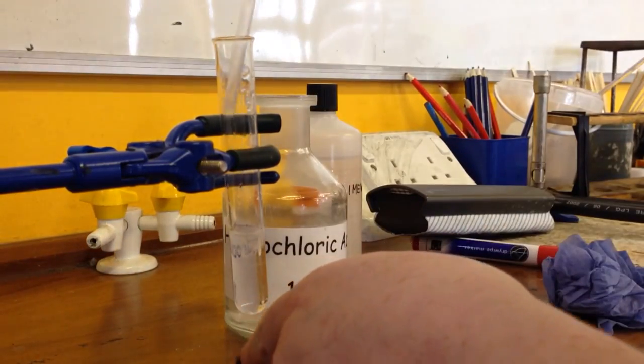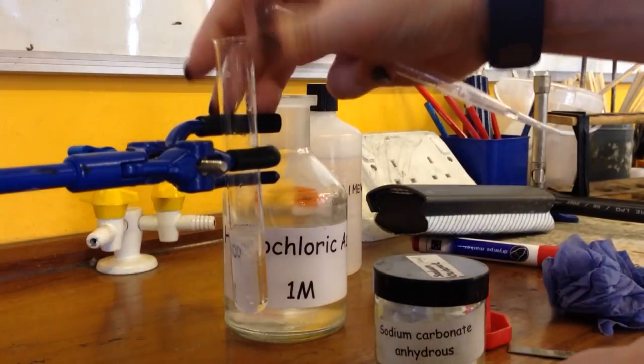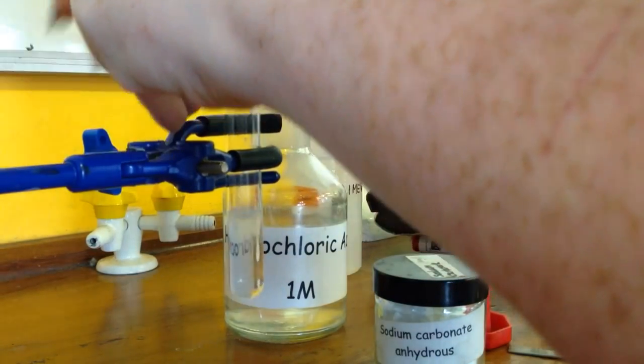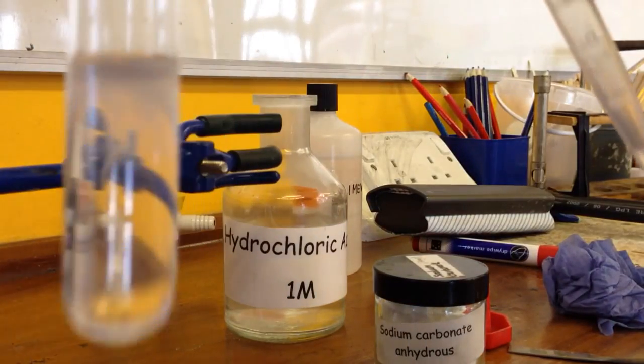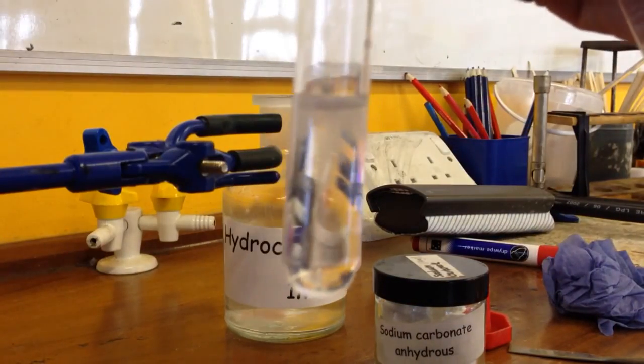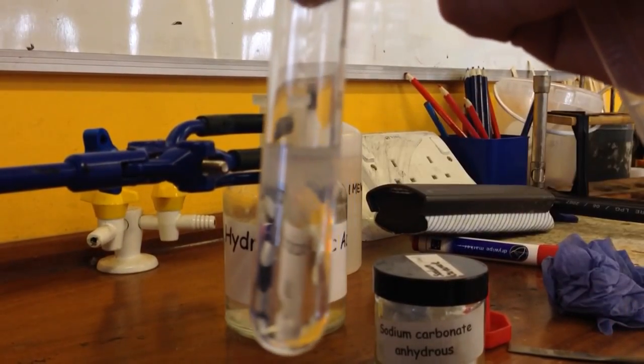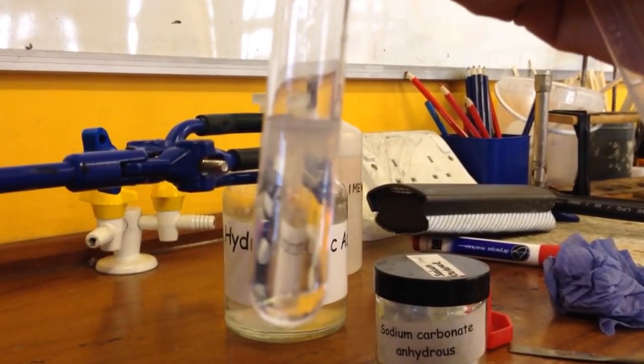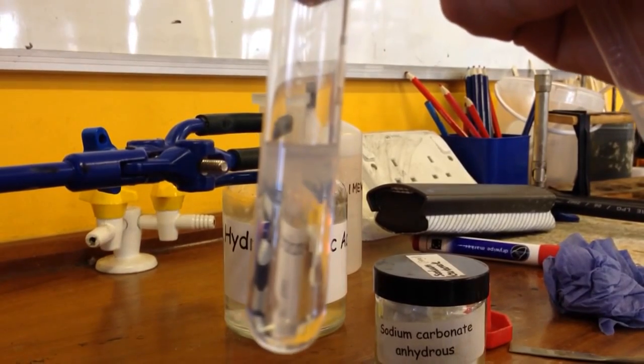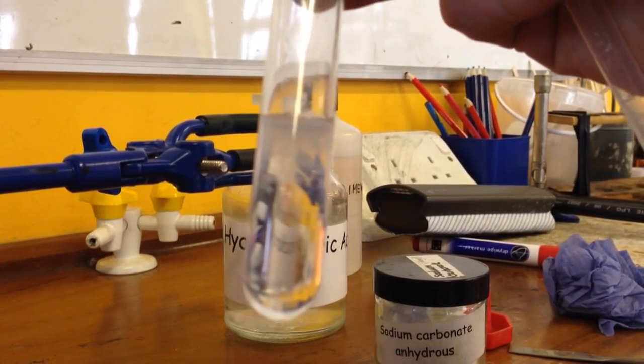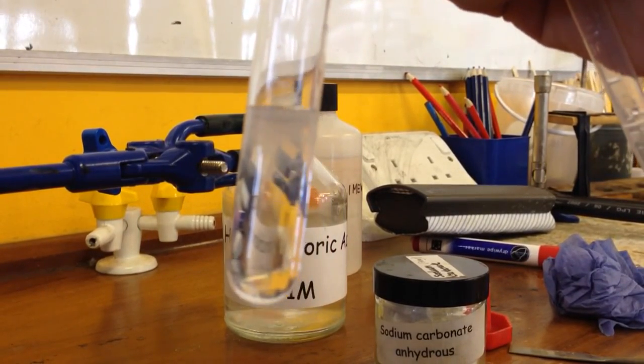Let me just unclamp that and bring it a bit closer for you. So the lime water has gone a little bit cloudy just at the top here. And that indicates the presence of carbon dioxide, and that is how we test for carbonate ions.